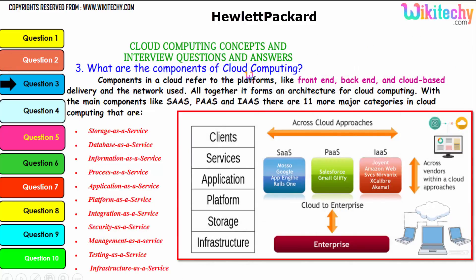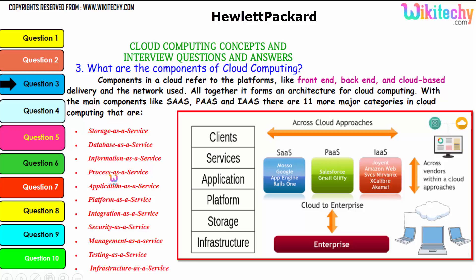The components of cloud computing refer to platforms like Software as a Service, Platform as a Service, and Infrastructure as a Service. There are 11 major categories in cloud: storage as a service, database as a service, information as a service, process as a service, application, platform, integration, security, management, testing, and infrastructure. These are additional services associated with the three major services to form cloud computing.